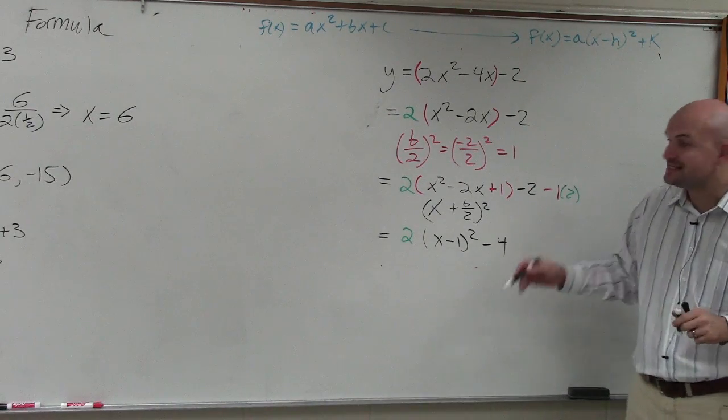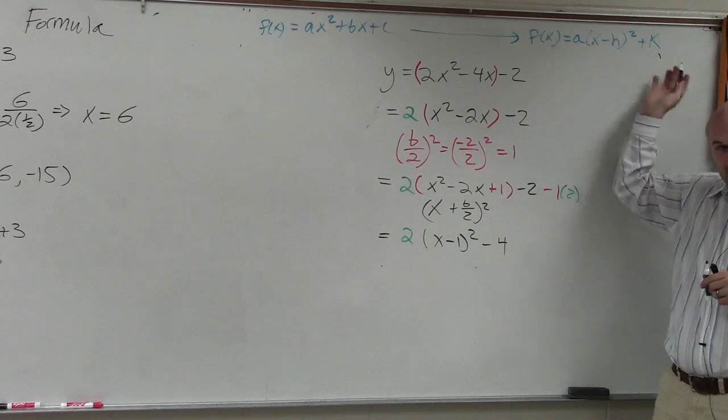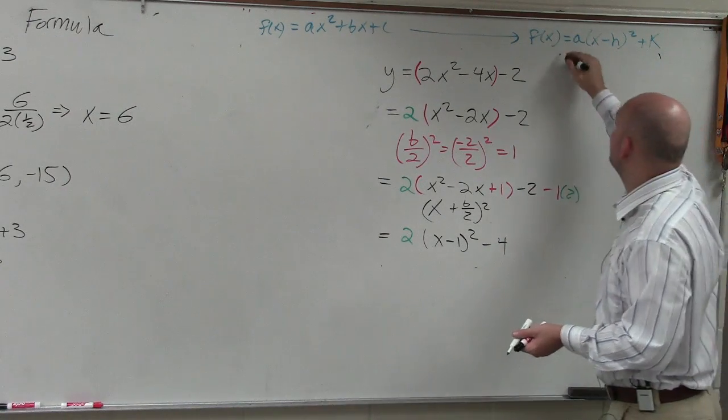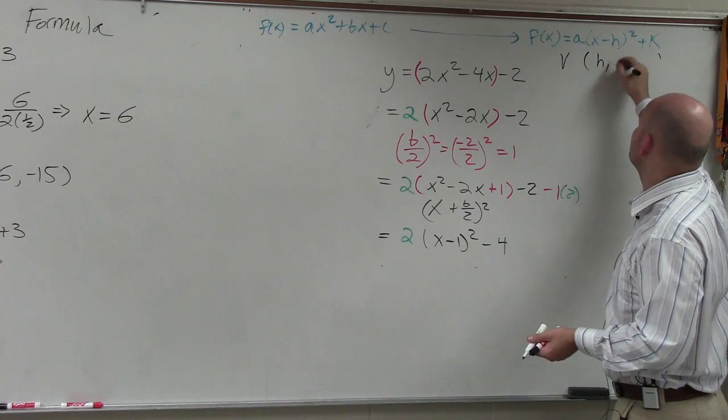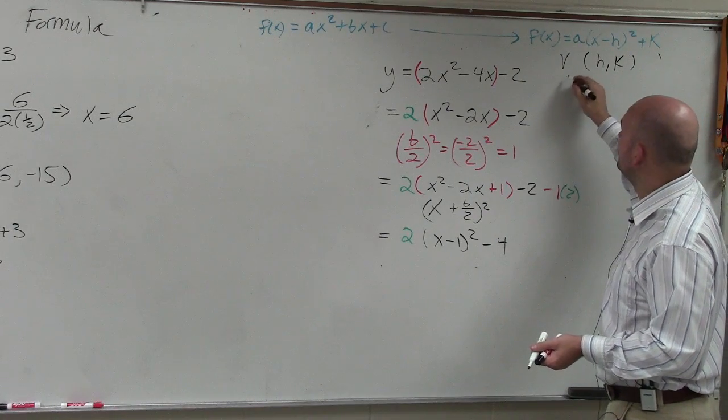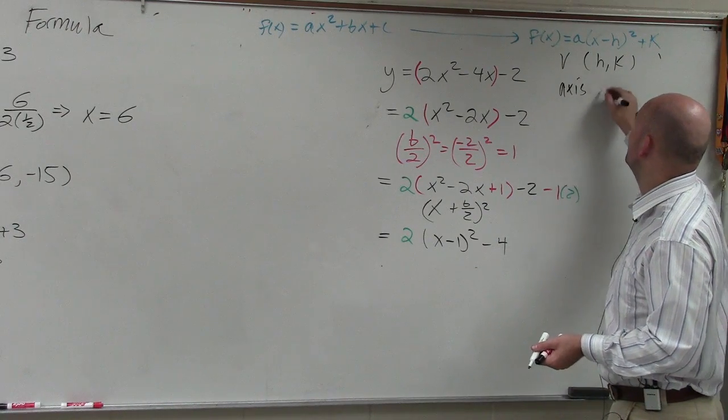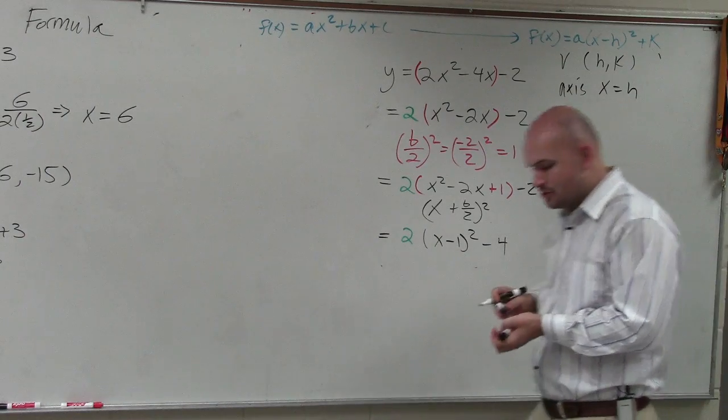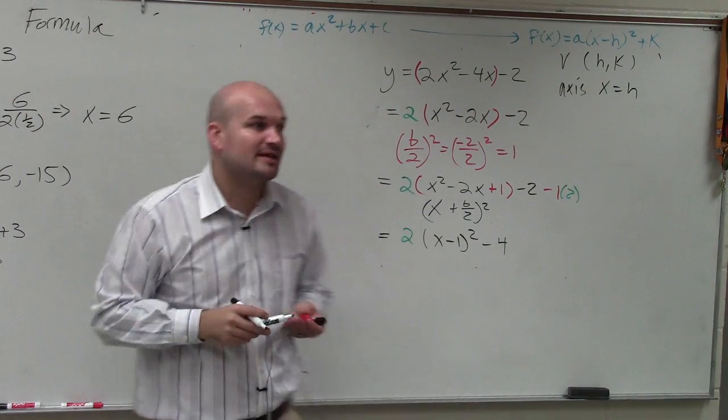Now, do you guys see how this is now in vertex form? And why is that so helpful? Because vertex form, we know the vertex is h comma k. We know that the axis of symmetry is x equals h. So by completing the square, we have now written in vertex form.